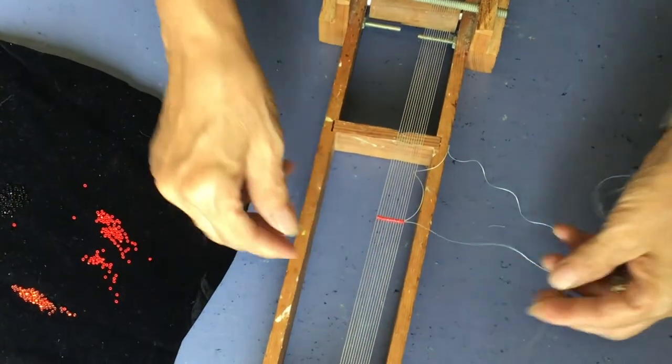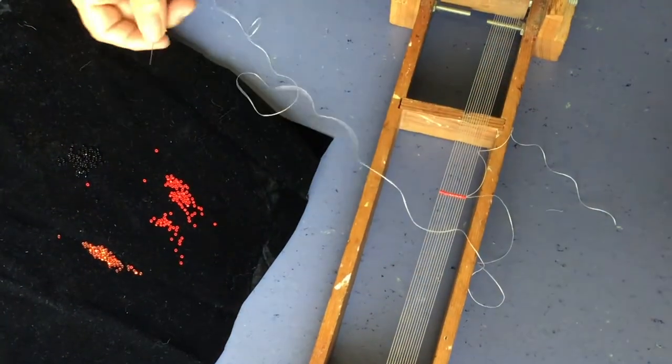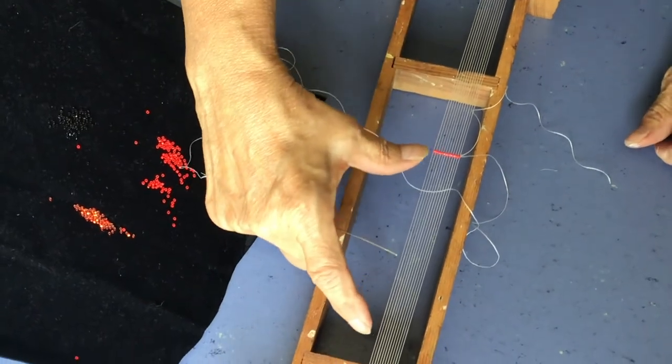You just do the same thing. Keep going. Needle under. Pick up 12. Back through. Until your piece is as long as you want it.